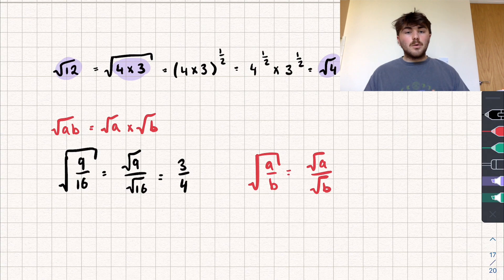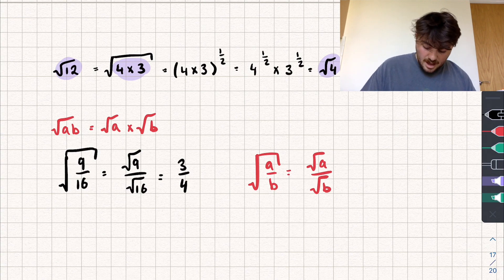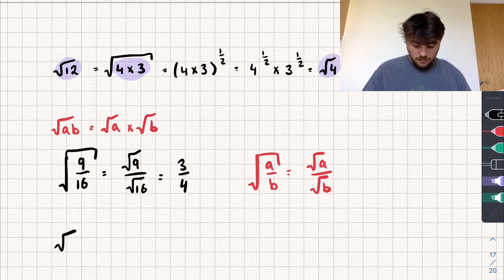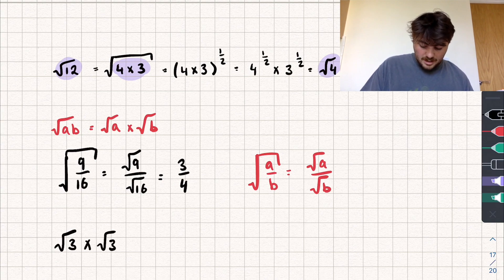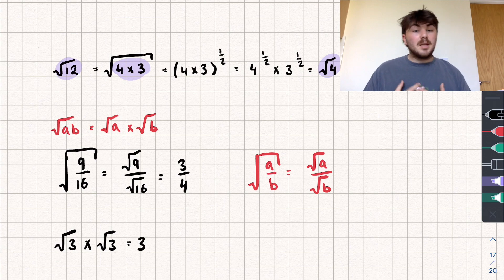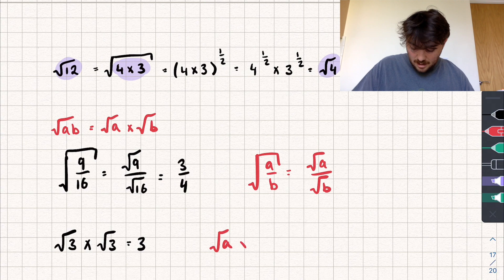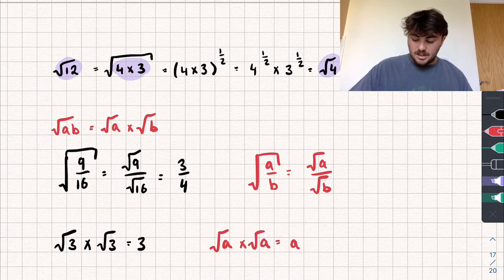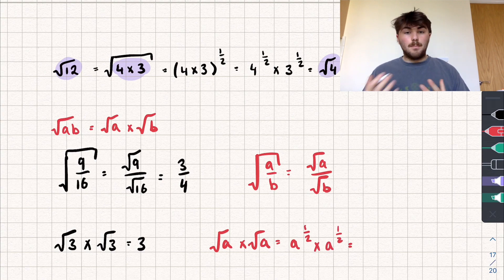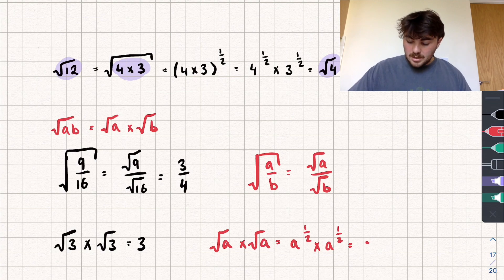The final rule makes a lot of sense. It says: if we take the square root of a number — say √3 — and multiply it by itself, that gives us the number inside the square root. The reason is easy: if we take √A multiplied by √A, using laws of indices that's A to the power of 1/2 multiplied by A to the power of 1/2. We have the same base A, so we add the powers: 1/2 plus 1/2 equals 1. So we get A to the power of 1, which is just A.